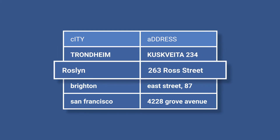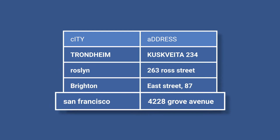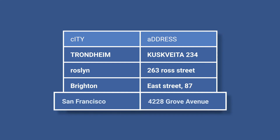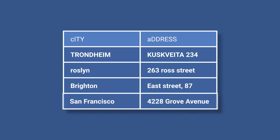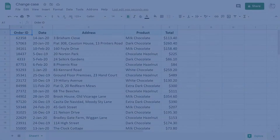Turn everything to lowercase, make only the first character of a cell capital, or capitalize the first letter of all words. No matter the option, it takes only a couple of mouse clicks to get there. Let me show you what I mean directly in spreadsheets.